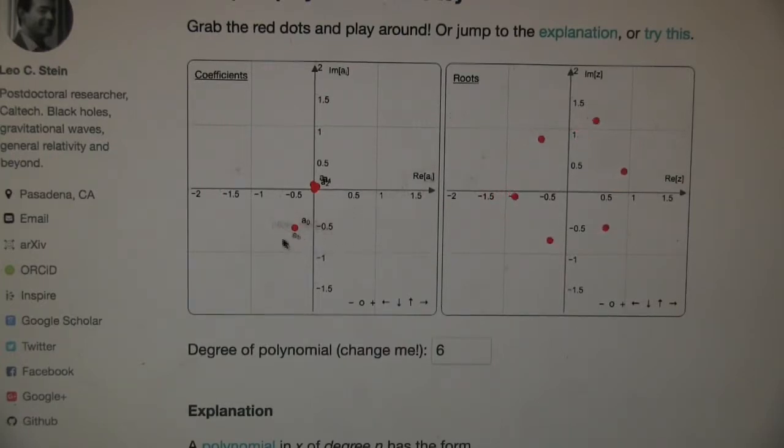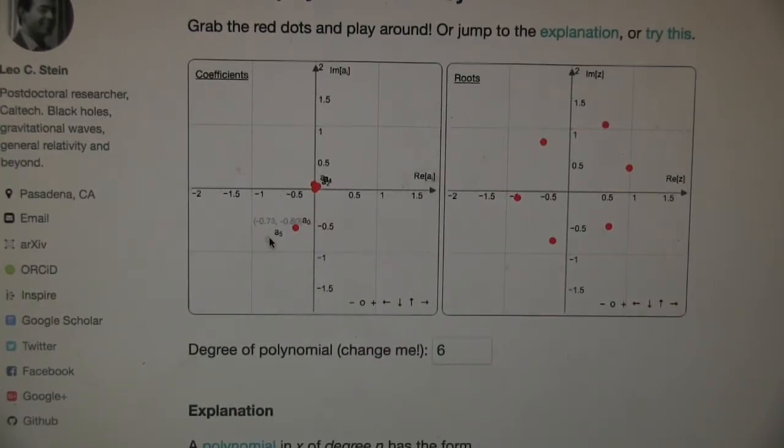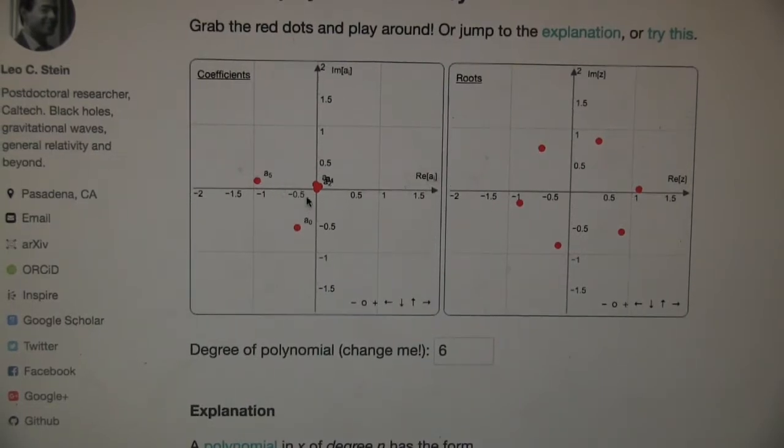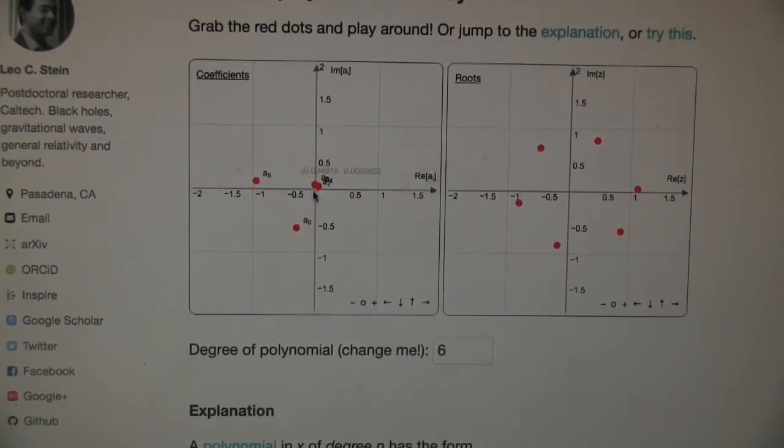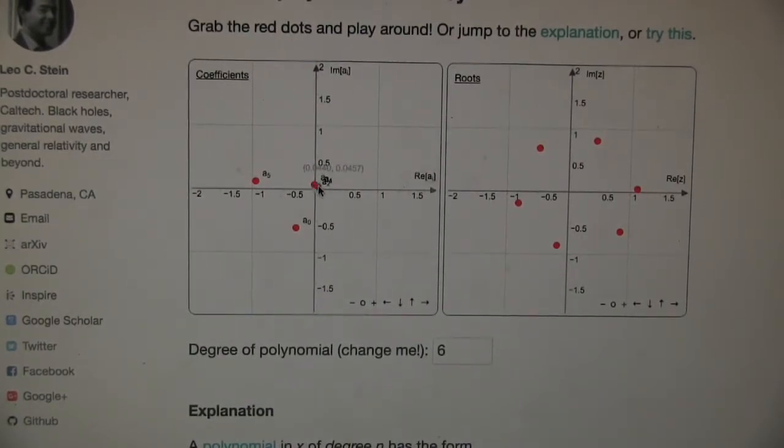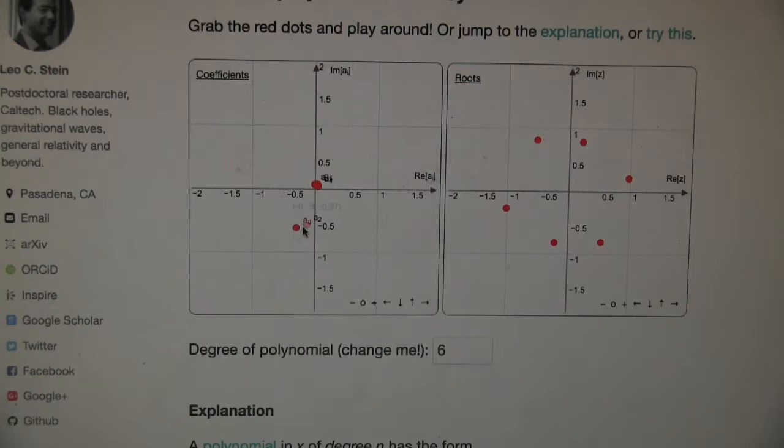What coefficient is that that you're moving around there? This is the A5 coefficient. So this is a 6-degree polynomial, and you're moving X, the coefficient of X to the fifth. I'll put the A5 in the origin. And then I'll move the A2.